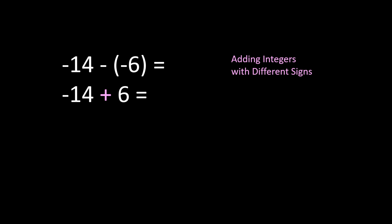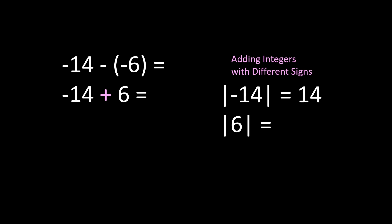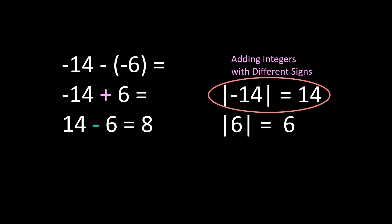We're going to follow the rules for adding integers with different signs. Those rules tell us to look at our absolute values. The absolute value of negative 14 is 14, and the absolute value of 6 is 6. We subtract the smaller absolute value from the larger: 14 minus 6 is 8. Then we determine the sign — the number with the larger absolute value is negative 14, so our answer is negative. Therefore, negative 14 minus negative 6 equals negative 8.